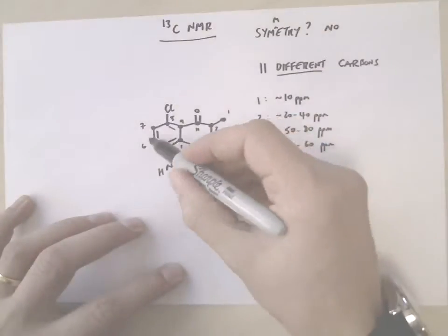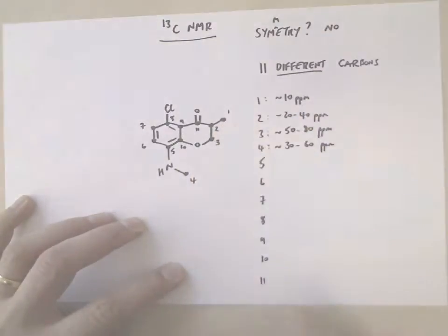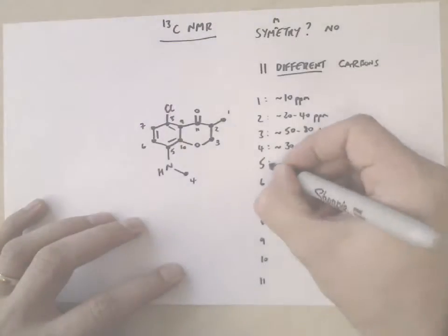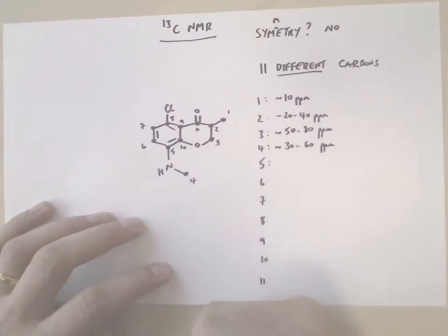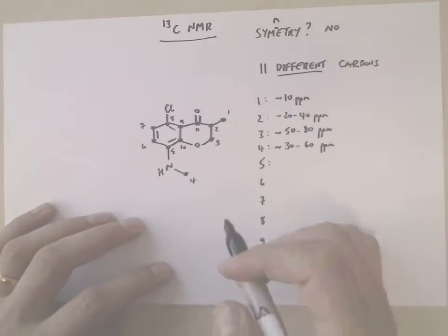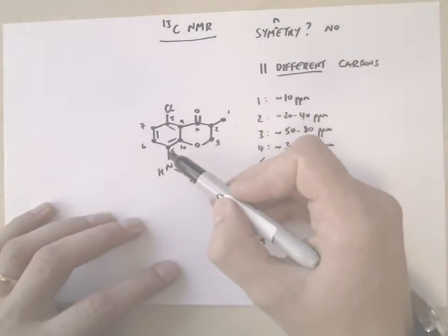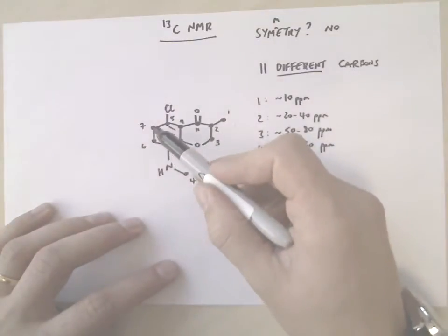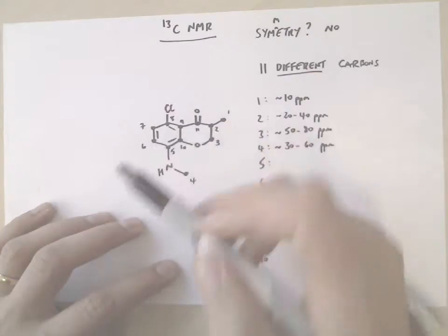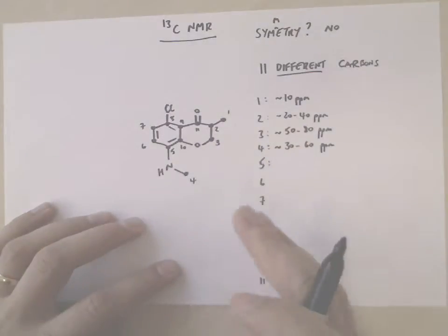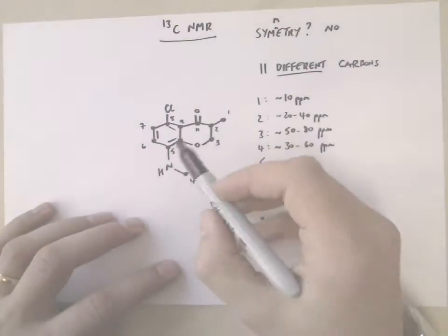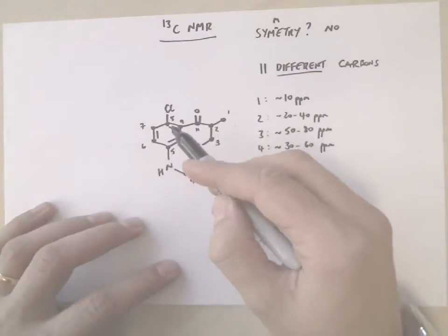Then we have these six benzene-type carbons. They're all aromatic, so they're all going to come in the region of 120 to 160 ppm. But those that have hydrogens on, 7 and 6, will be slightly lower, and those that don't have any hydrogens on, so 5...